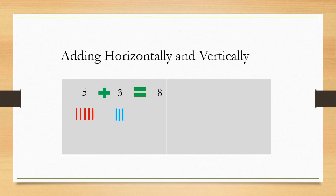Now, let's do the same question vertically — that is, one below the other. 5 plus 3. For this also, you can draw the lines. First draw 5 lines: 1, 2, 3, 4, 5. Then draw 3 lines: 1, 2, 3. Now count how many lines there are in all. There are 8 lines. So when you add the numbers horizontally or vertically, the answer will be the same. The total will be the same.